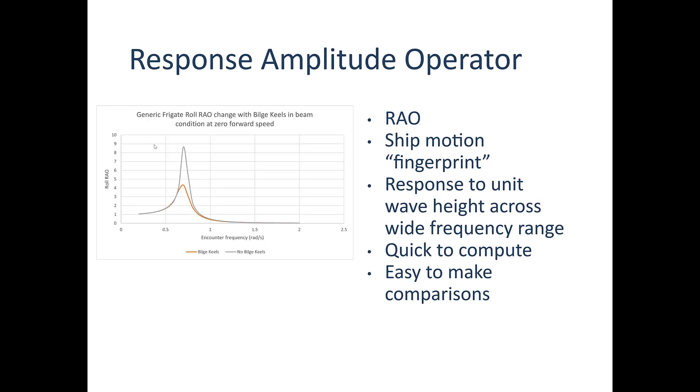The response amplitude operator, RAO, this is sort of like a dynamic fingerprint of what the ship is like, and how this is computed and what this actually is, is a response to ship motion to unit regular wave height across a wide frequency range. We're looking at a picture here of the generic frigate roll RAO, and on the horizontal axis here, we have the encounter frequency. Essentially, that's the wave frequency. And then the roll RAO is the magnitude. This is the motion amplitude, the sinusoidal motion amplitude, divided by the amplitude of the wave. Well, that's just one, right?